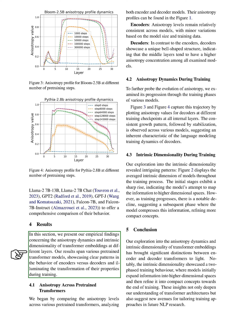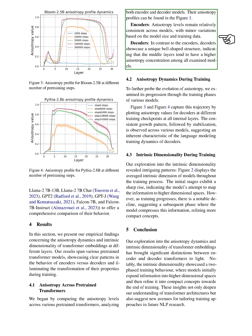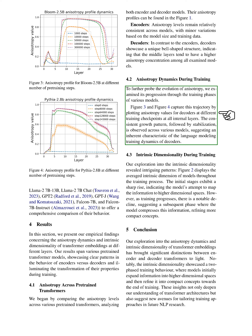In our results, we've found clear patterns in the behavior of encoders versus decoders and how their properties change during training. Encoders have relatively consistent anisotropy levels, with minor variations based on model size and training data. Decoders, on the other hand, have a unique bell-shaped structure, indicating that the middle layers tend to have a higher anisotropy concentration. We've also found a consistent growth pattern followed by stabilization across various models, suggesting an inherent characteristic of the language modeling training dynamics of decoders.